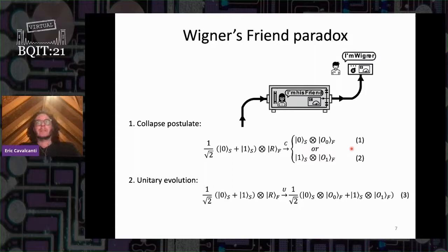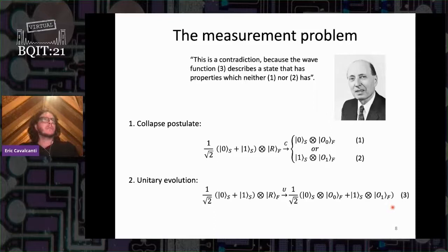On the other hand, if the friend's lab is isolated from the external environment, according to the unitary evolution postulate we describe the joint state of S and the friend after the measurement interaction as an entangled superposition. We can conclude this is a contradiction because the wave function describes a state that has properties which neither one nor two has.